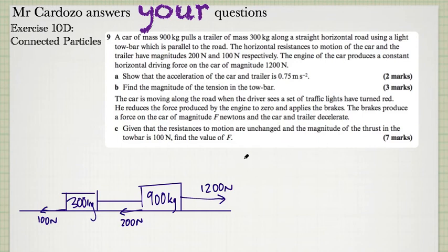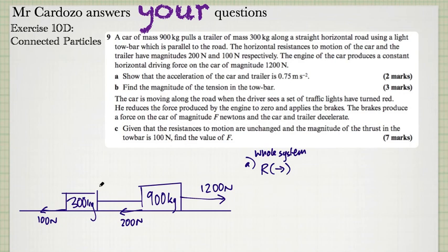Part A: show that the acceleration of the car and the trailer is 0.75 meters per second squared. Because it says car and trailer, I'm going to look at the whole system and resolve horizontally. There are vertical forces — gravity and reaction forces — but they're not relevant to the horizontal acceleration of this system. I'm going to put together an F equals MA equation.